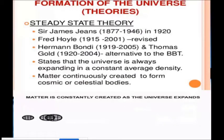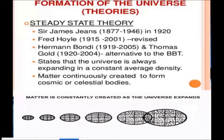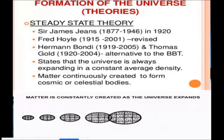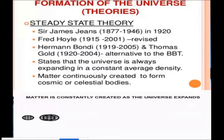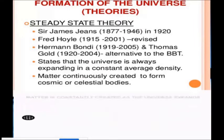Then let's go to the steady state theory. According to Sir James James, in 1920, Fred Hoyle revised in Herman Bondi and Thomas Gold, the alternative to the BBT, they state that the universe is always expanding in a constant average density. Matter continuously created to form a cosmic or celestial body. It means the steady state theory, it's always been the same since the beginning. They expand, but they constant the average and the density.